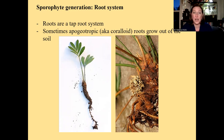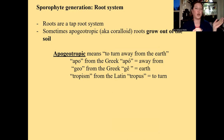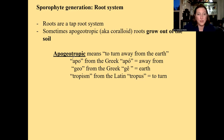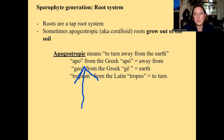I like the word apogeotropic because the name tells you what it does. 'Apo' comes from the Greek meaning 'away from,' 'geo' means 'earth,' and 'tropism' refers to the Latin 'tropis,' meaning 'to turn.' So apogeotropic roots are roots that turn away from the earth — meaning they grow up out of the soil, away from the earth below.